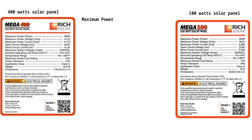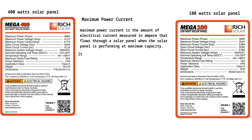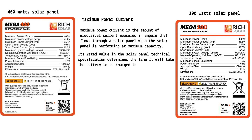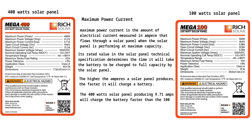3. Maximum power current. Maximum power current, abbreviated as IMP, is the amount of electrical current in amperes that flows through a solar panel when it is performing at maximum capacity. Its rated value determines the time it will take the battery to be fully charged. The higher the amperes, the faster it will charge a battery. The 400-watt solar panel producing 9.71 amps will charge the battery faster than the 100-watt solar panel producing 5.38 amps.